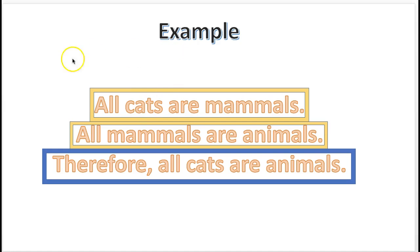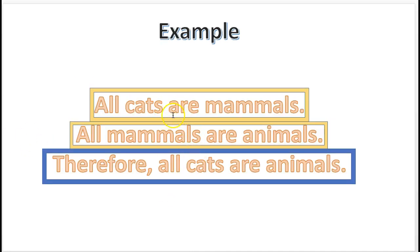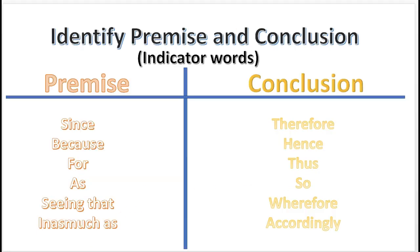Here's an example of an argument. These are the premises, and this here is the conclusion. You're going to be an expert at identifying arguments and separating the premise and the conclusion. Here's a list of premise indicator words — since, because, and others. Here's a list of conclusion indicator words. These indicator words will help you recognize if it's a conclusion or a premise. Notice the conclusion indicator word 'therefore' — that lets you know that a conclusion is coming next. You can take a screenshot of this or make a note.